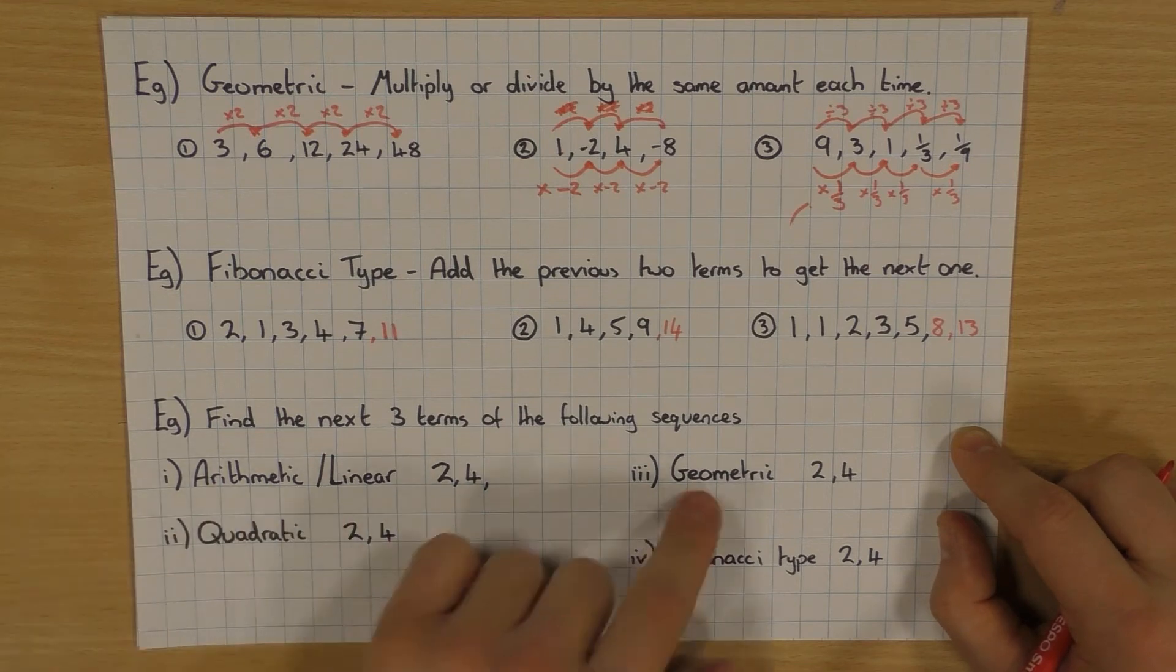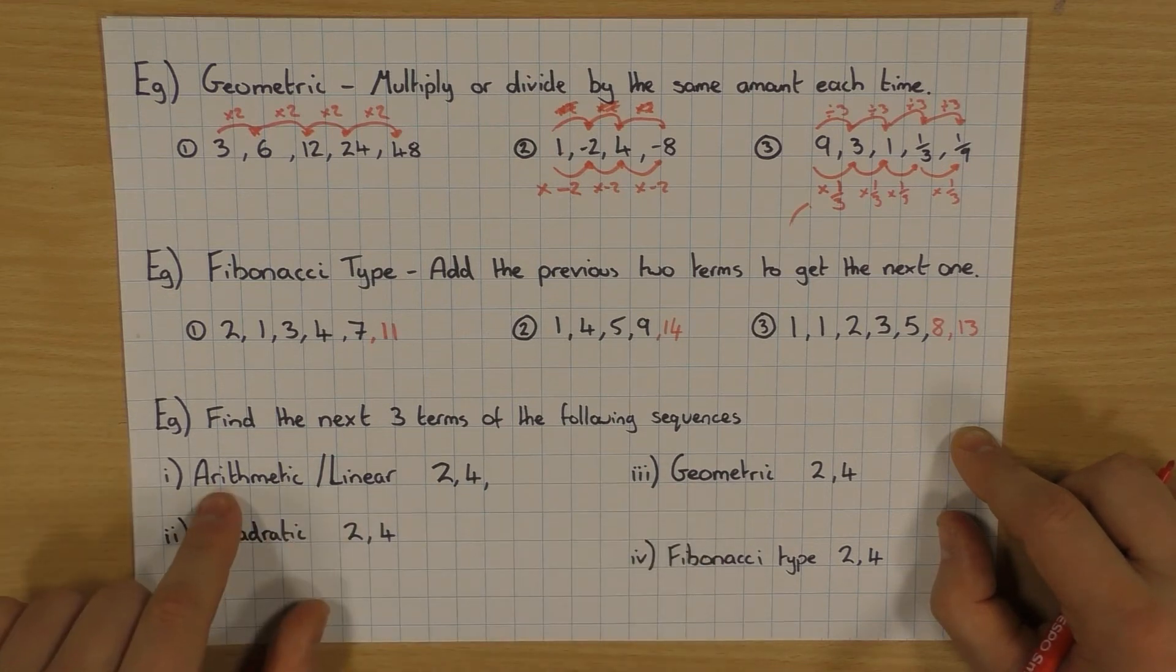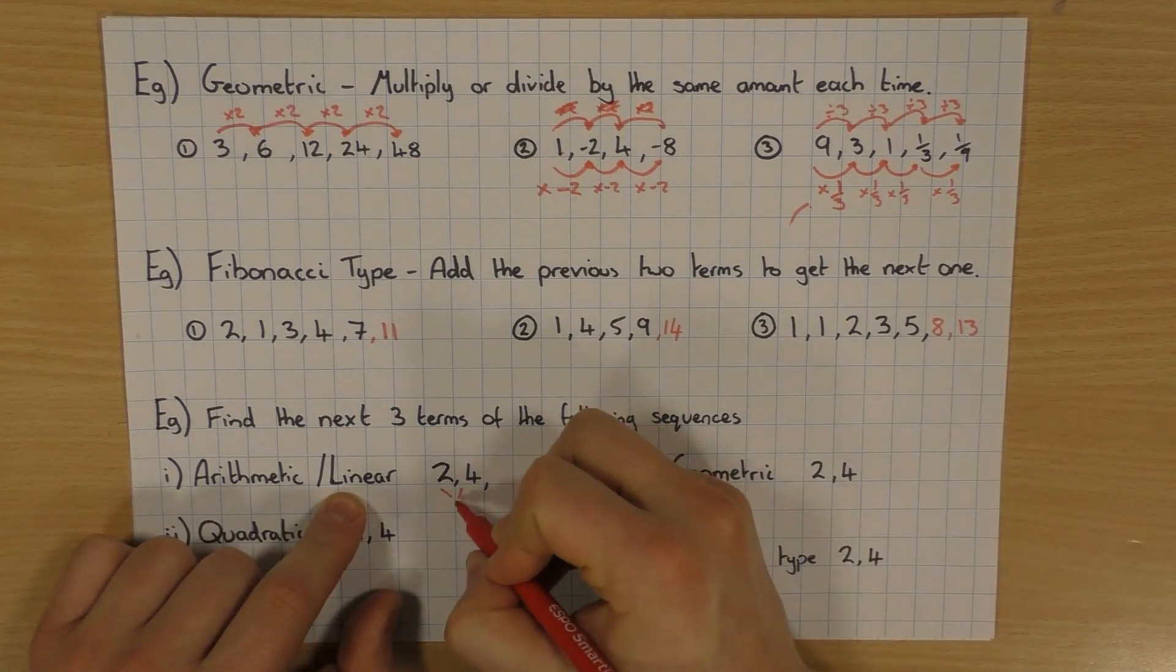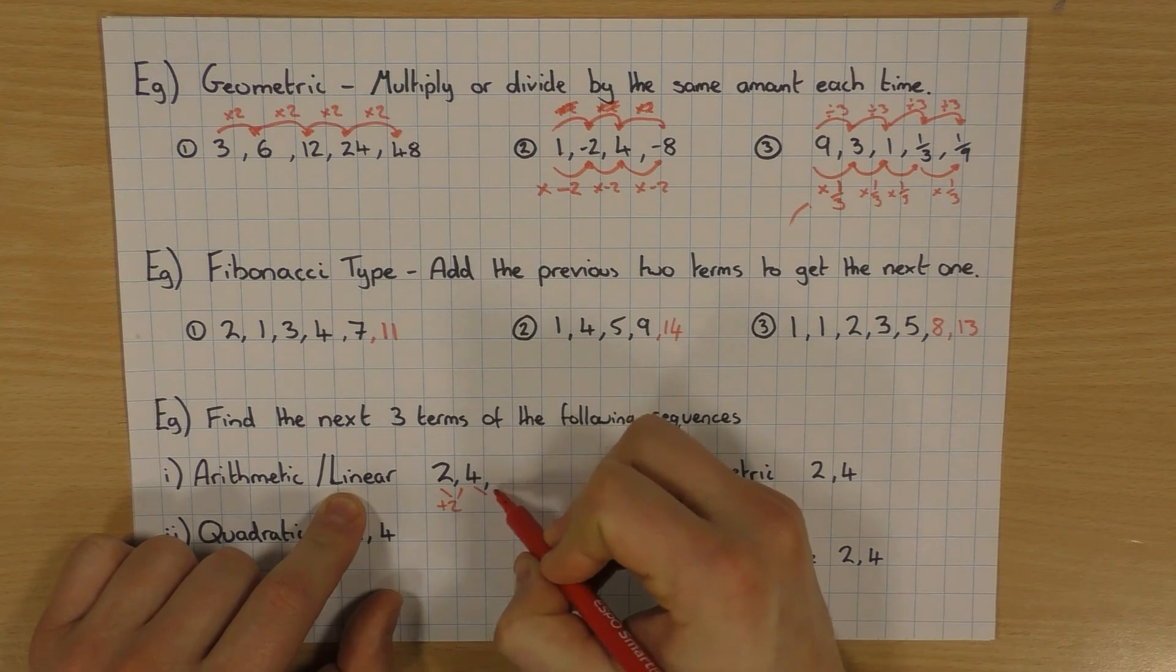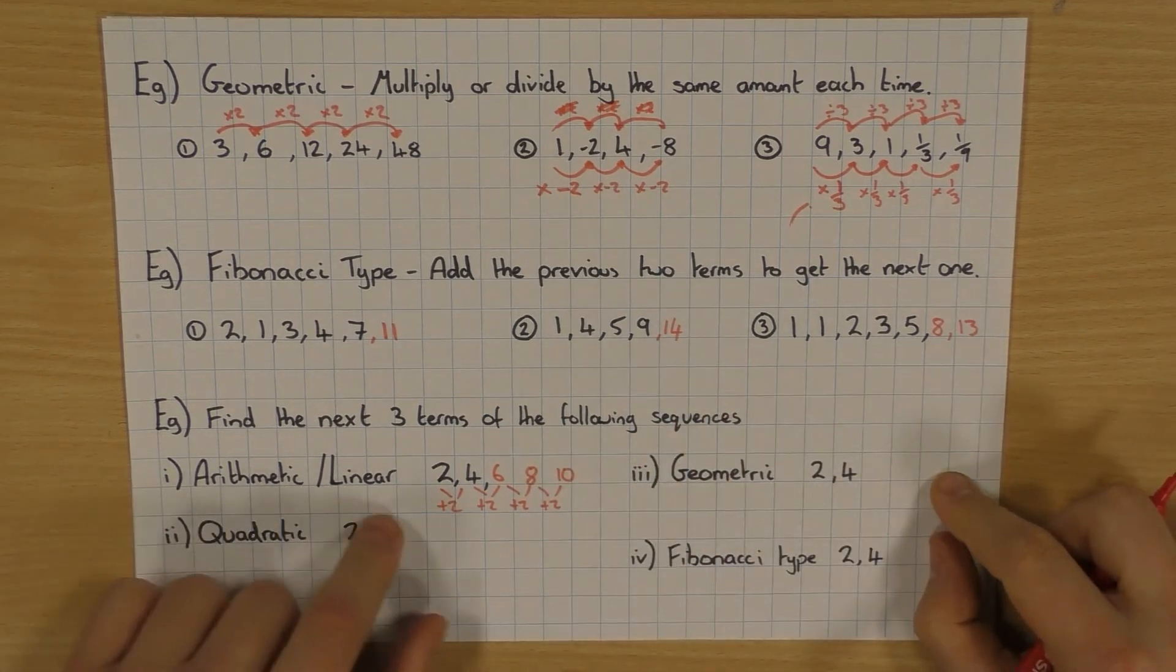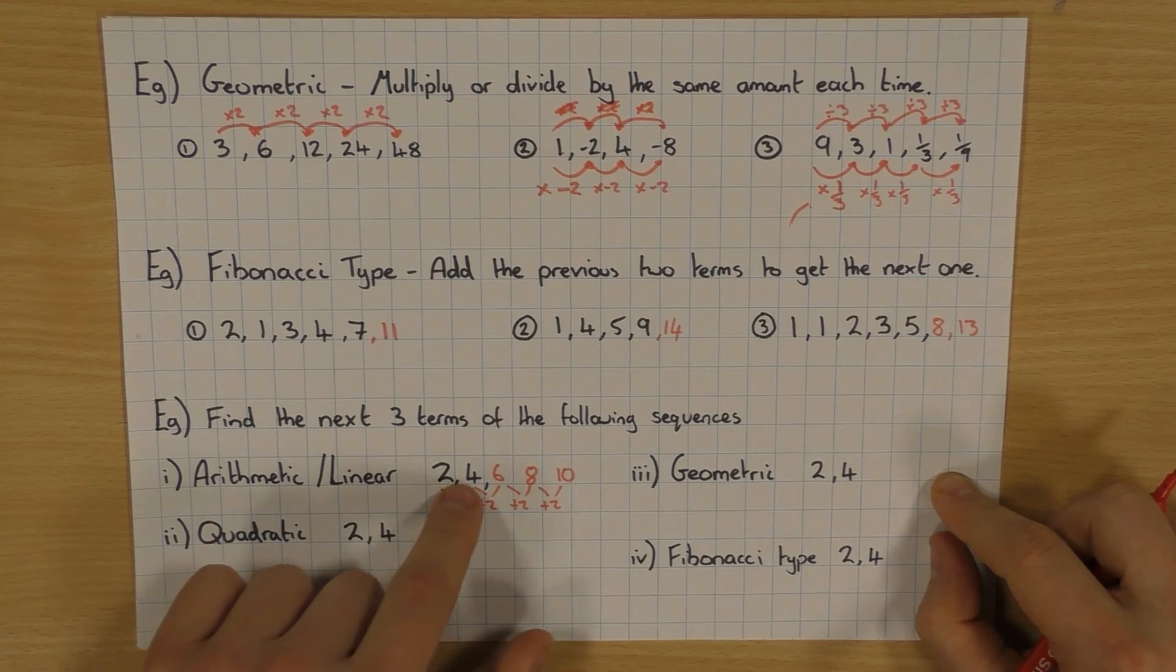So what you just do here is remember the rules for each one. So arithmetic or linear, we're going up by the same amount. So I'm adding 2 here. So I just need to keep going. Add another 2. That'll give me 6. Add another 2. That'll give me 8. Add another 2. That'll give me 10. So just remember the rule. Have a look at the first one. The difference there is 2. It's going up in 2s. So keep the rule going.